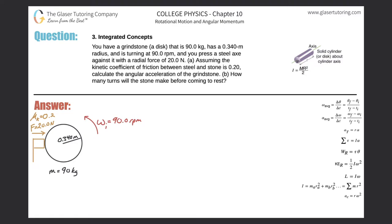Number three, integrated concepts. You have a grindstone, a disc that is 90 kilograms and has a 0.34 meter radius, turning at 90 RPM. You press a steel axe against it with a radial force of 20 newtons. Assuming the kinetic coefficient of friction between the steel and the stone is 0.2, calculate the angular acceleration of the grindstone. The wheel is going to slow down, so it should have some negative angular acceleration.